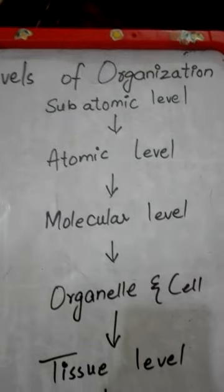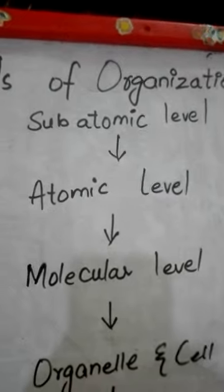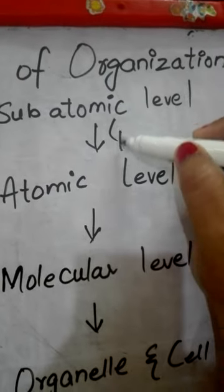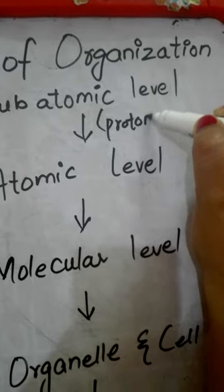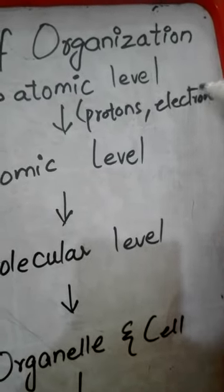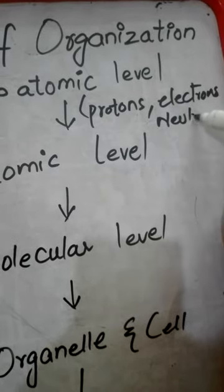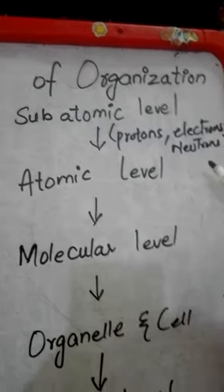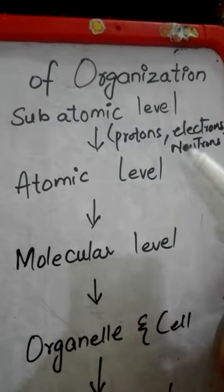So what is the subatomic level? Subatomic level is about the subatomic particles. They are protons, electrons, and neutrons. These are the subatomic particles. They create this level, the subatomic level in which we discuss electrons, protons and neutrons.